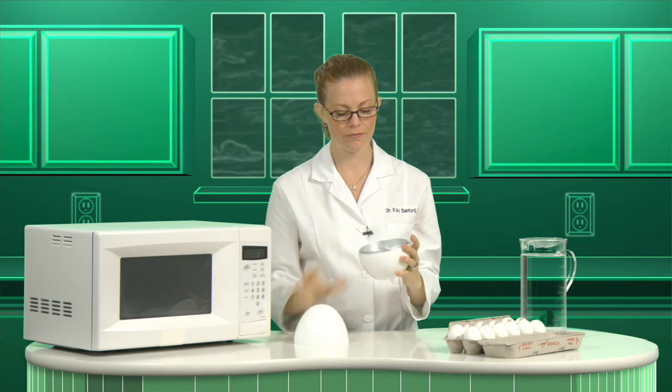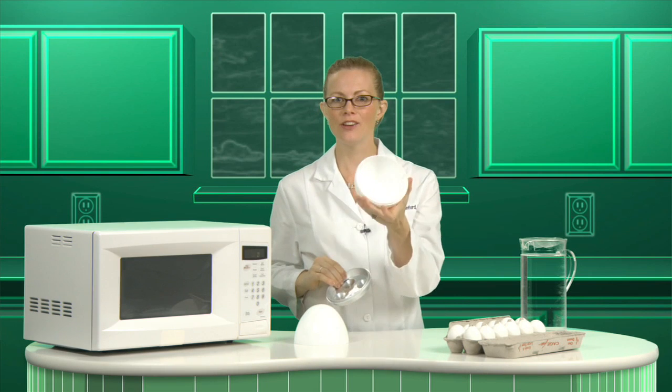This microwave egg boiler consists of a lid, an aluminum tray, and a well for water. But aluminum in the microwave? Well, it turns out that as long as there are no sharp edges—notice this tray is nice and round—there's no place for the electrical current created in metal objects by microwaves to collect and create a spark.